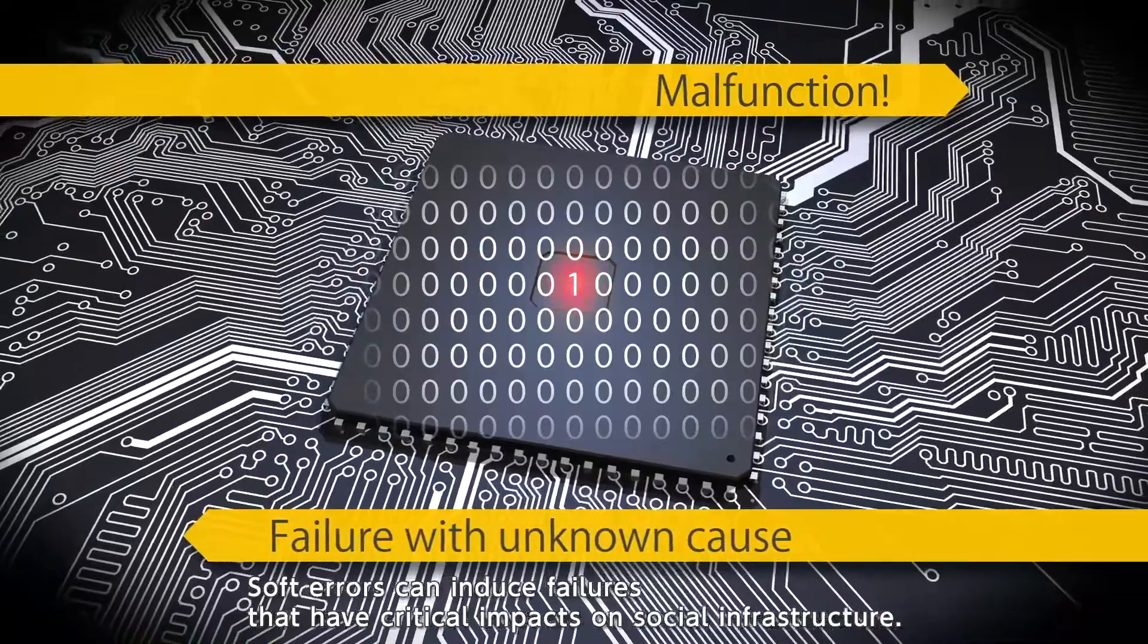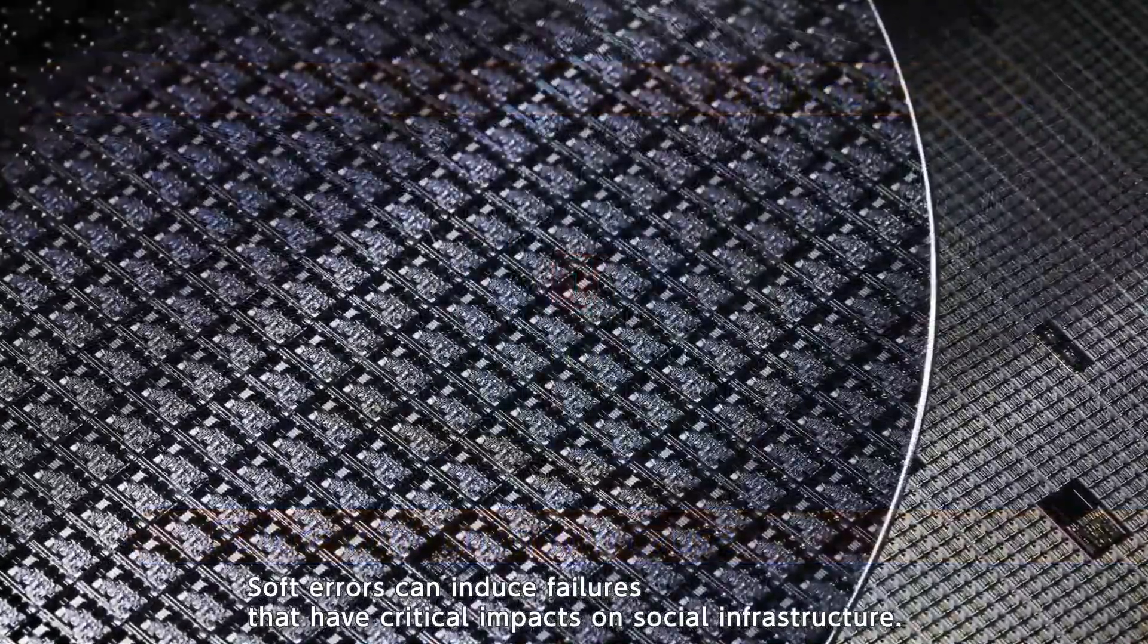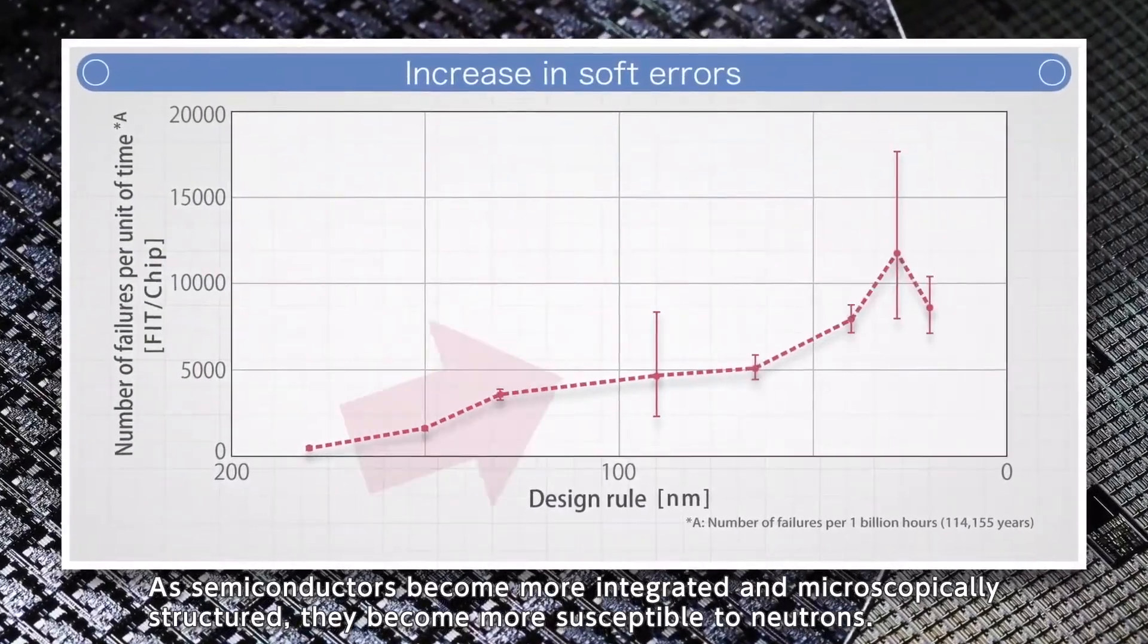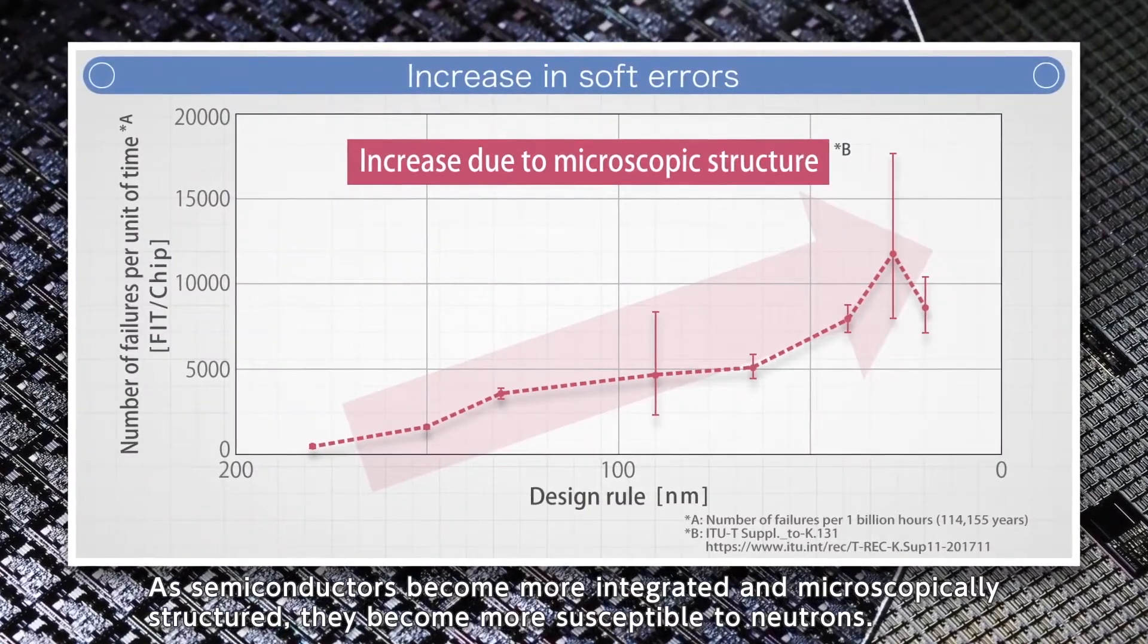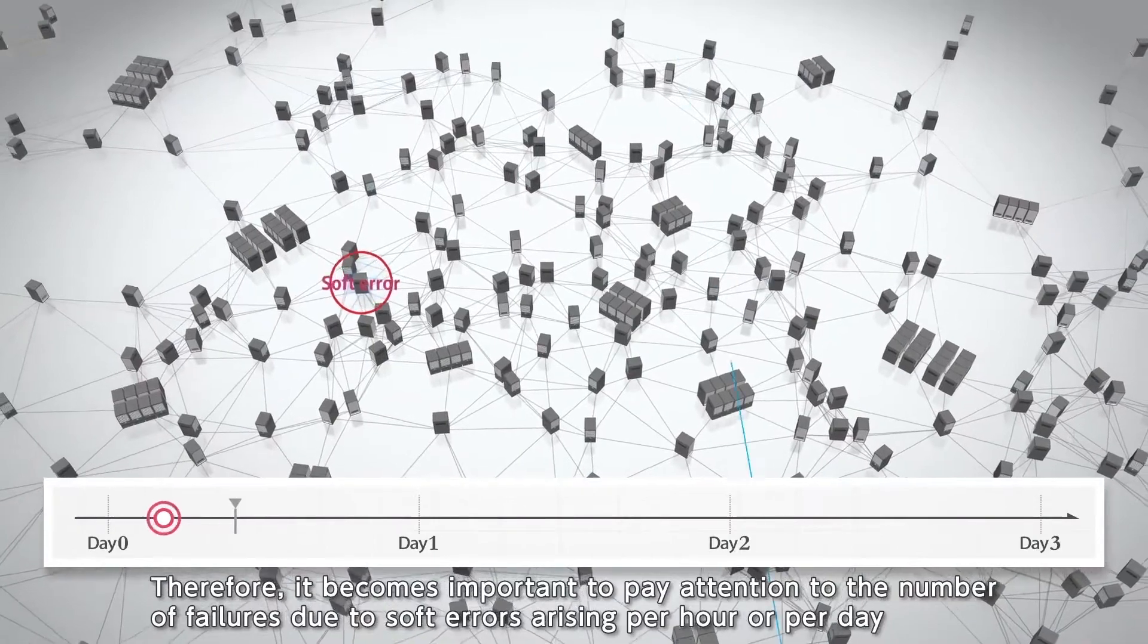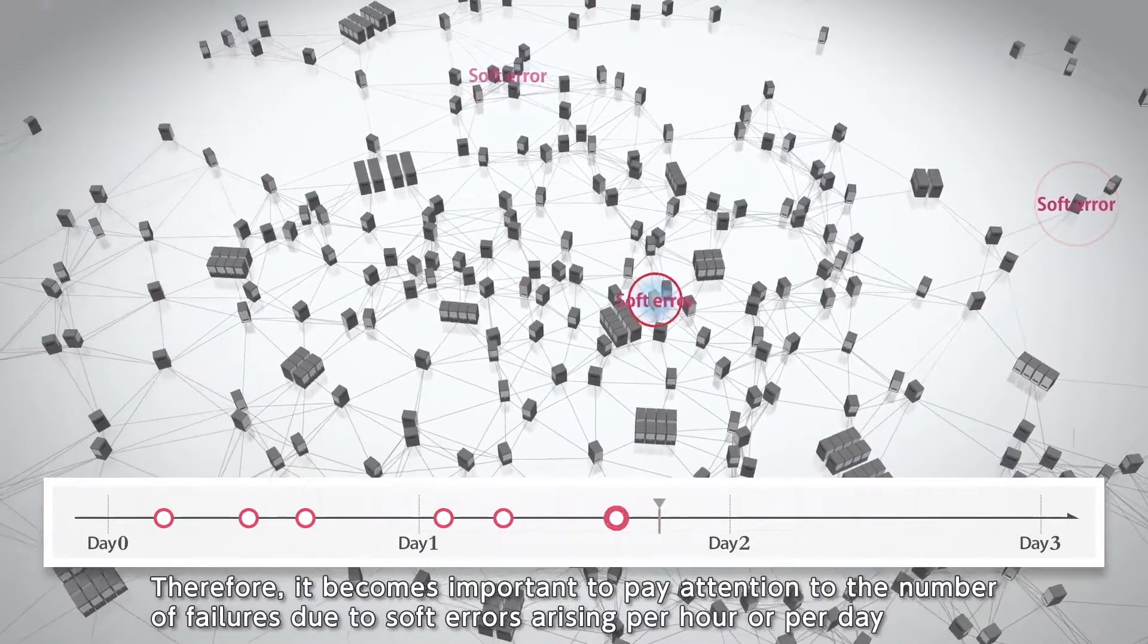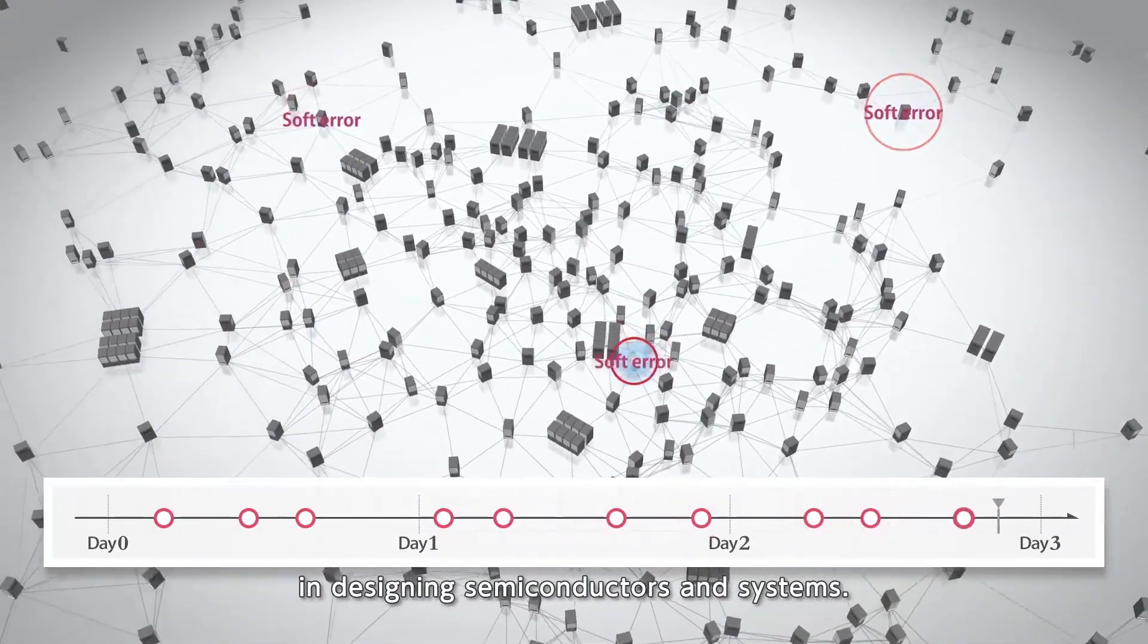Soft errors can induce failures that have critical impacts on social infrastructure. As semiconductors become more integrated and microscopically structured, they become more susceptible to neutrons. Therefore, it becomes important to pay attention to the number of failures due to soft errors arising per hour or per day in designing semiconductors and systems.